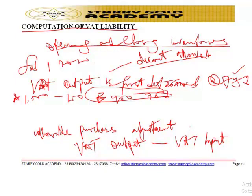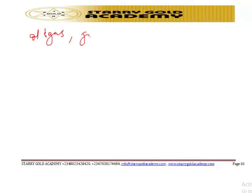However, the VAT liability for the current period can be further adjusted if there are VAT reverse charges already deducted by third parties — for instance, oil and gas companies and governmental agencies such as ministries, departments, and agencies — during the same period. You need to adjust for the VAT reverse before applying the applicable VAT rates on the net sales.